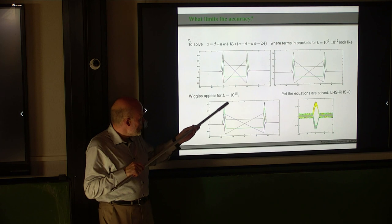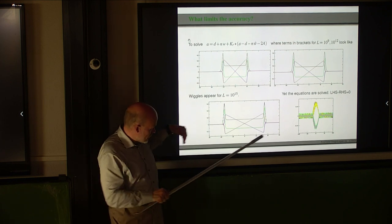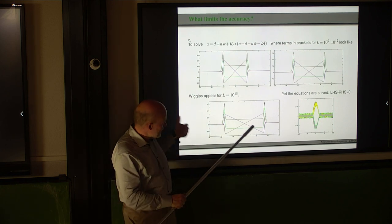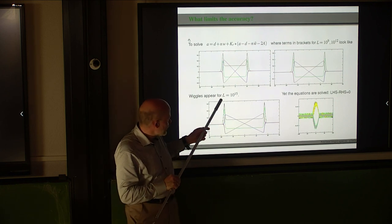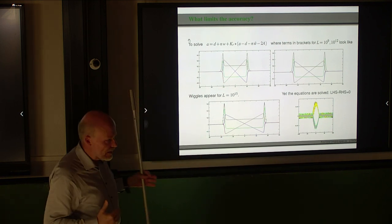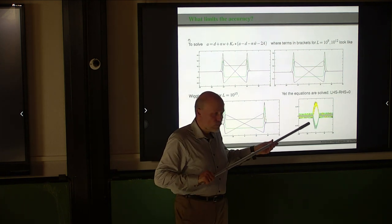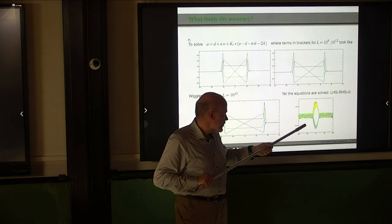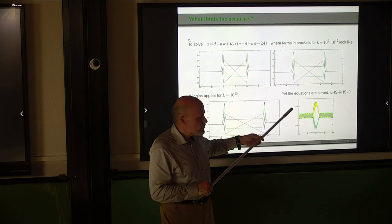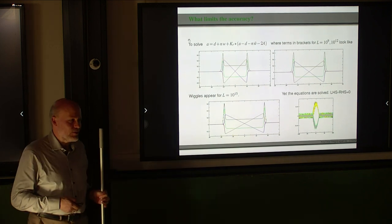For very large sizes like 10¹⁵, you see this tendency developing further but also some wiggles. One might think everything is unstable, but I show the difference between the left-hand side and right-hand side after 1,000 iterations. You see noise, but look at the amplitude — it is 5 × 10⁻¹⁶. So the equations are satisfied.